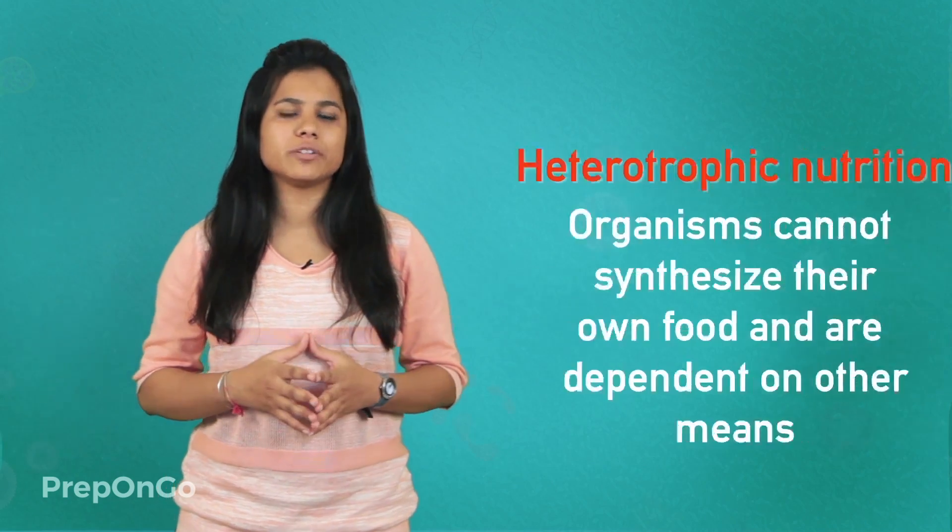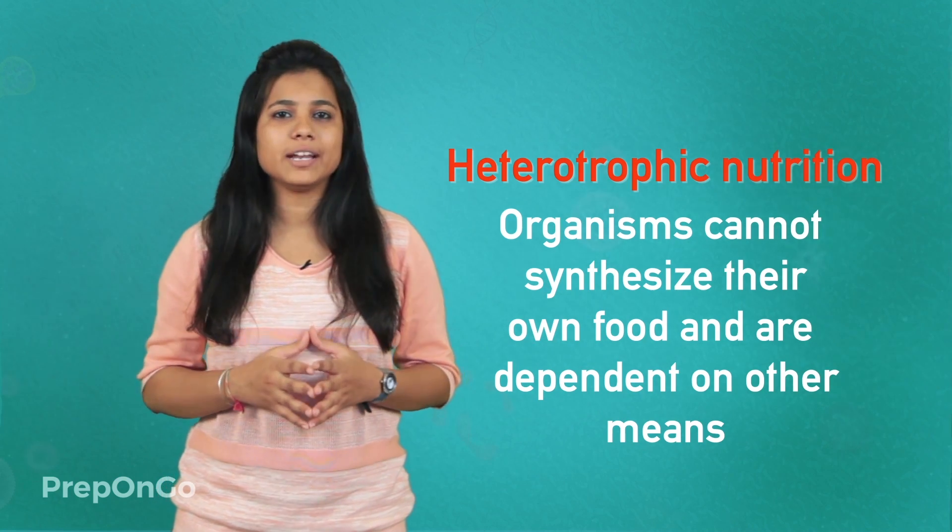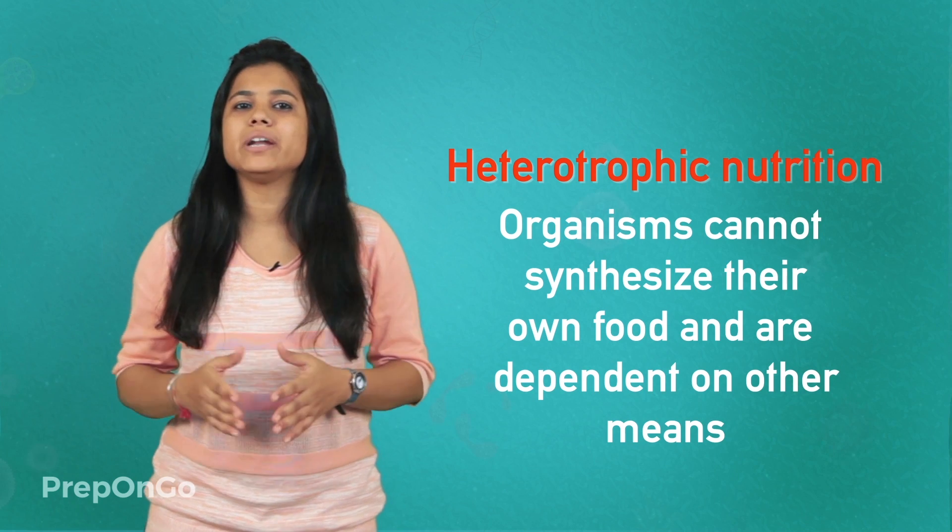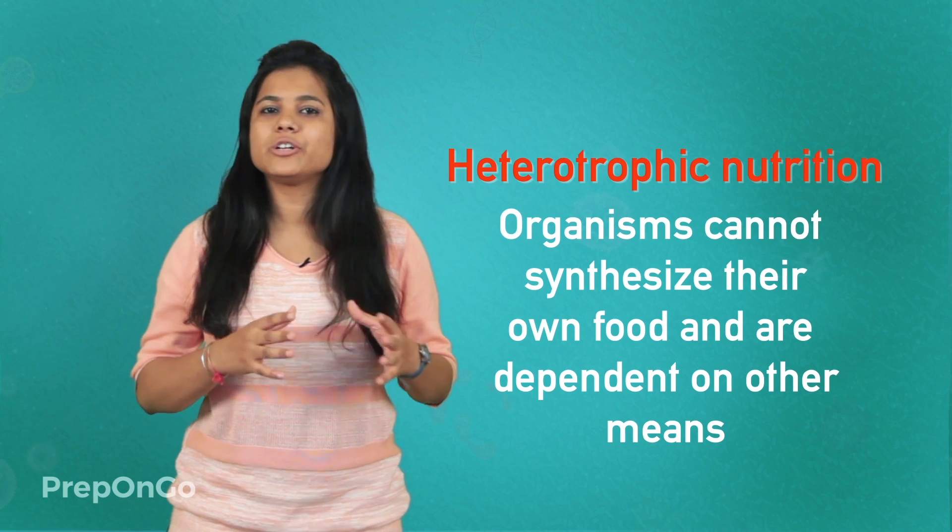Now when we talk of animals, they cannot prepare their own food. But they can move in search of their food. So such type of nutrition where an organism cannot synthesize their own food and is dependent on other organic substances is called heterotrophic nutrition.